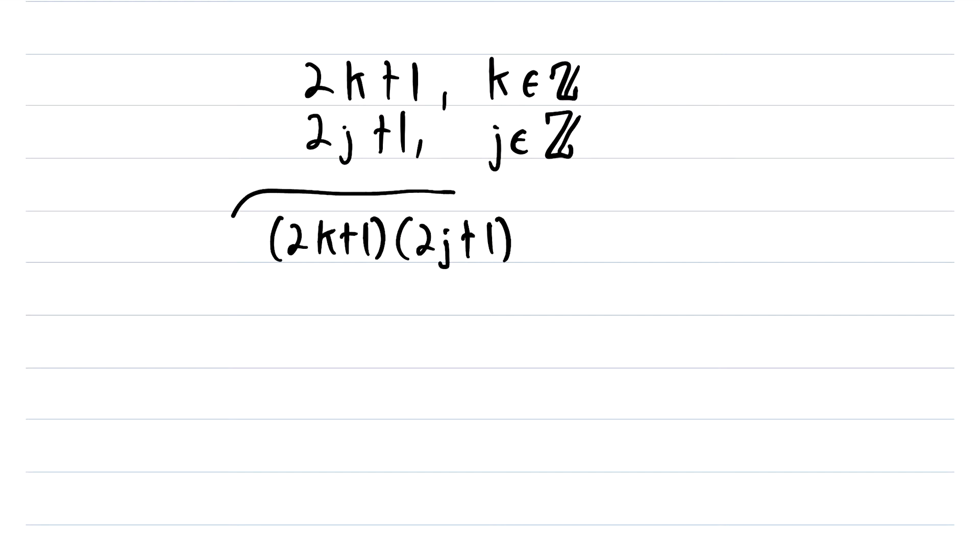And we want to show that when we multiply these numbers, we get something like this, something in the form of 2 times an integer plus 1.